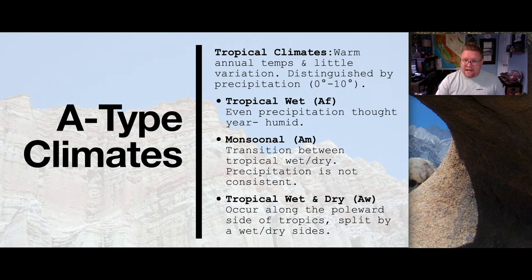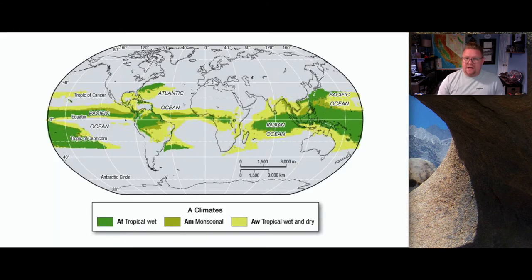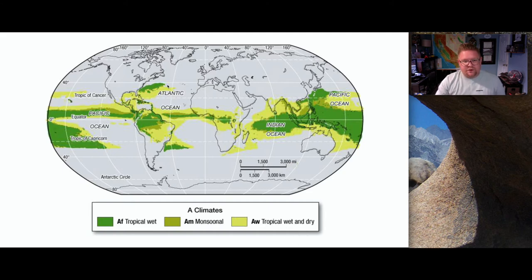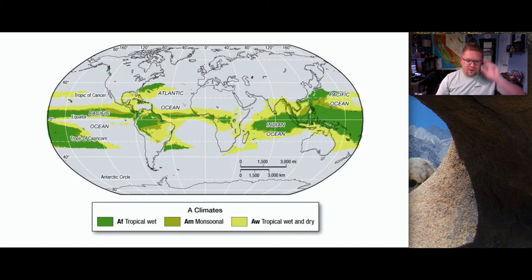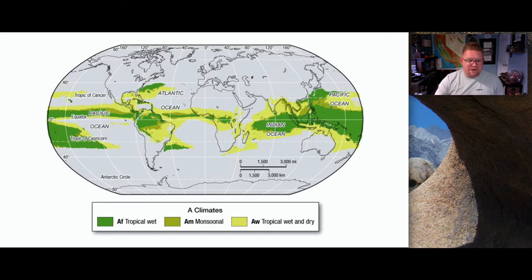Looking at the map for letter A, showing AF, AM, and AW, we can see correlations with latitude. The AF tropical climate is right along the equator and stretches within the tropics. There are some random other spots that receive tropical wet, dry, and monsoonal climates, some as close as the 40th parallel on either side. Letter A is really dealing with areas of extreme precipitation — either wet all the time, wet almost all the time, or wet most of the time.